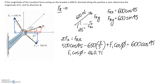We can't solve this equation for a unique solution yet because we have two unknowns: F1 and phi. We need a second equation to solve them simultaneously. We get that second equation by summing forces in the y direction, since we have a constraint there as well.